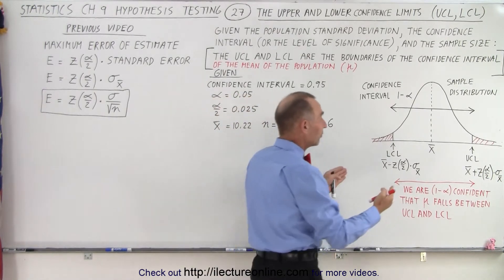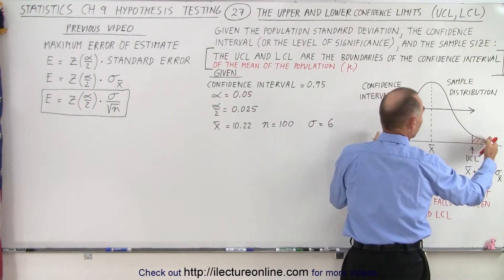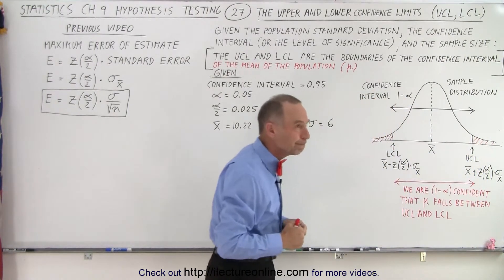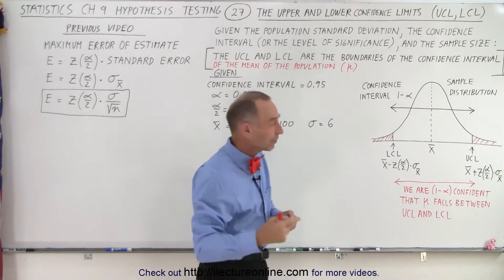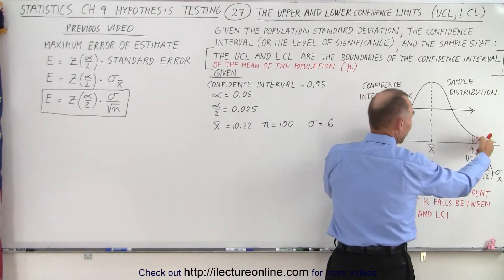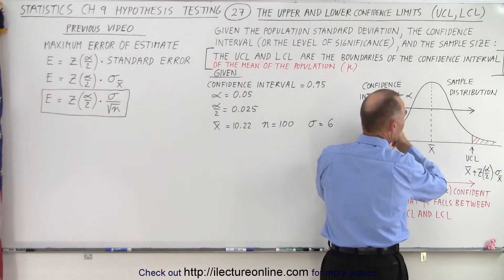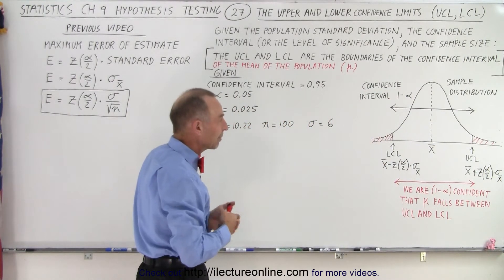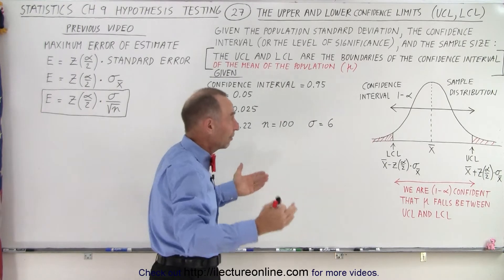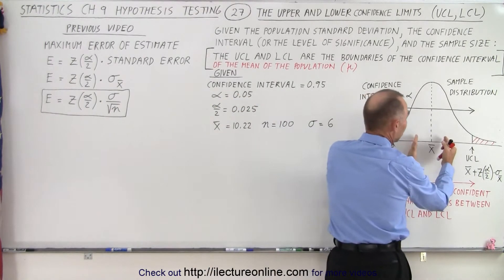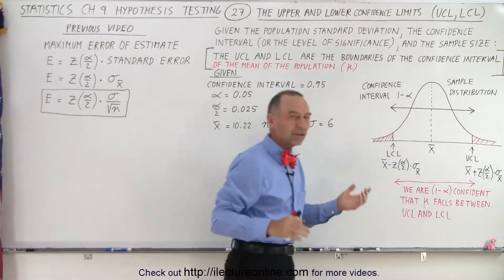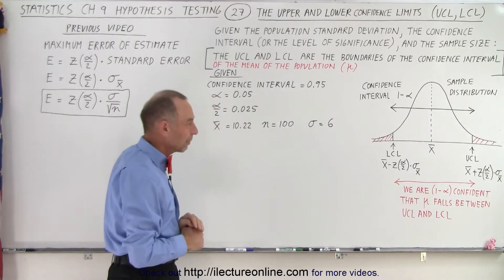The greater the level of confidence, the wider the interval will become; the smaller the level of confidence, the narrower it will be. A greater level of confidence pushes these limits out, giving us a greater range where we expect to find the mean of the population. If you have a small level of confidence, it falls within a small region; a large level of confidence means a larger region — that makes sense.